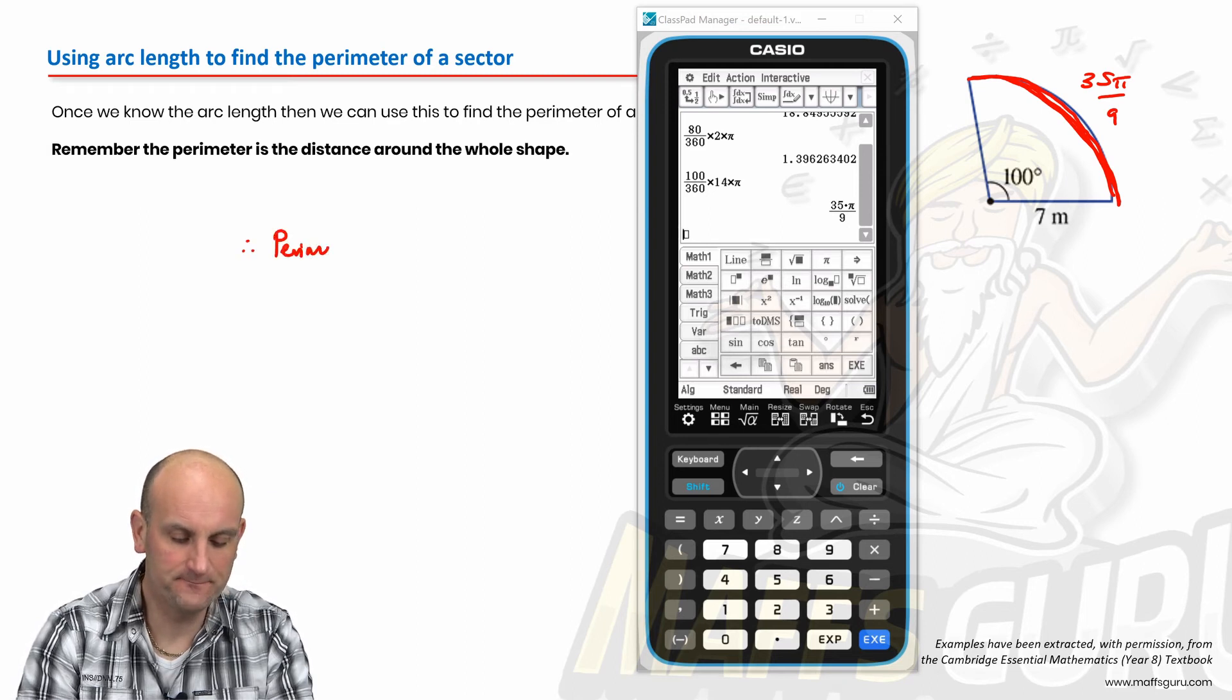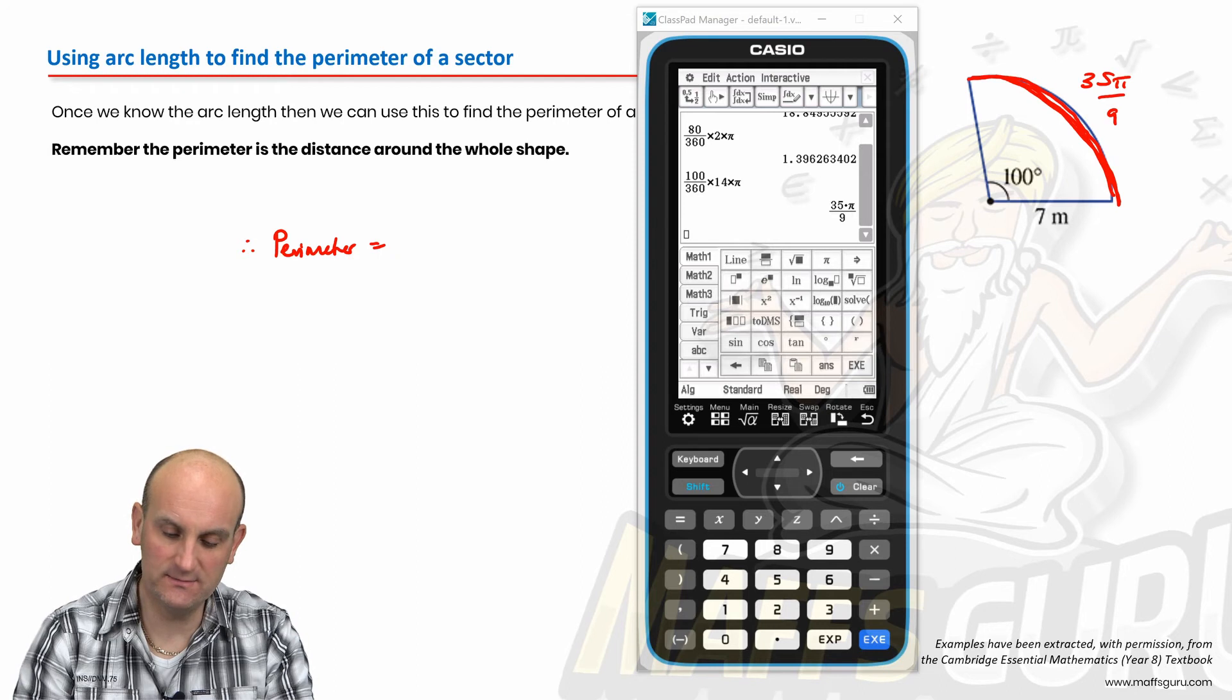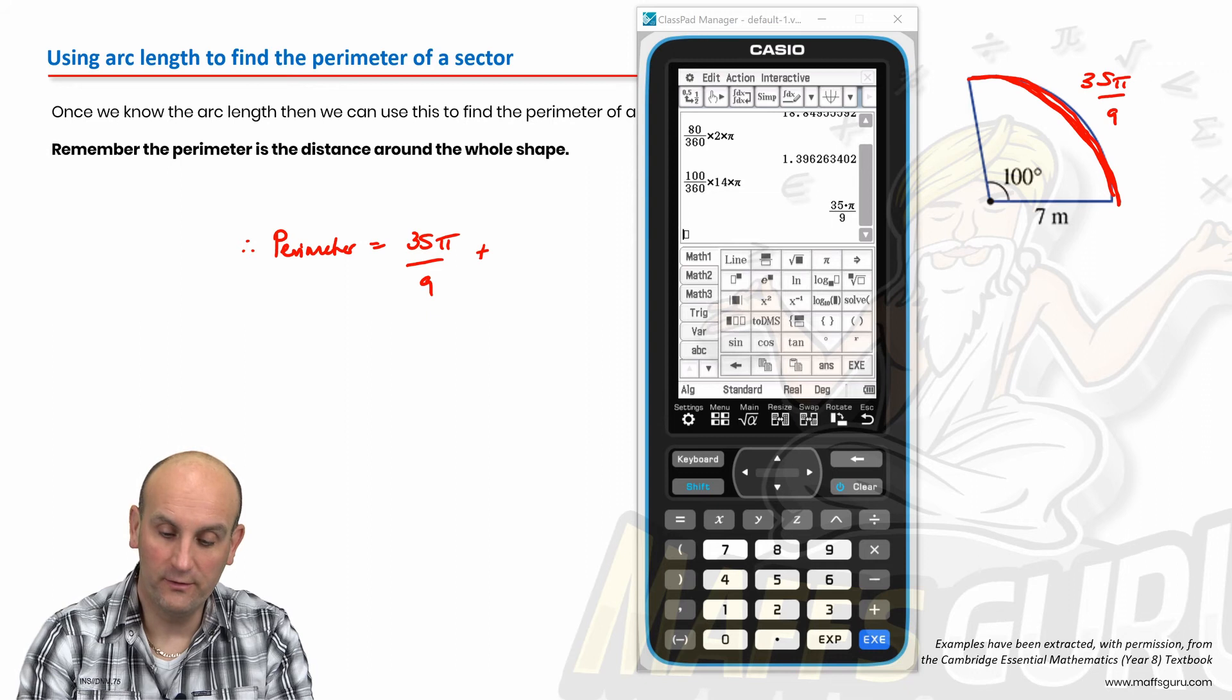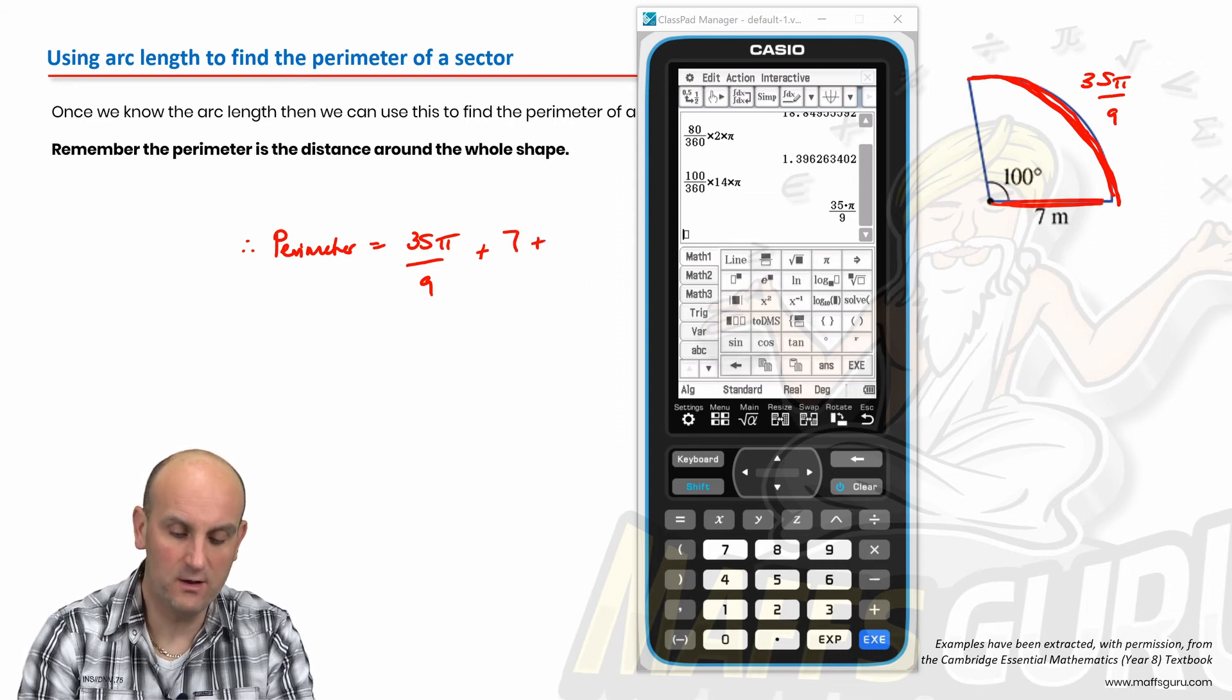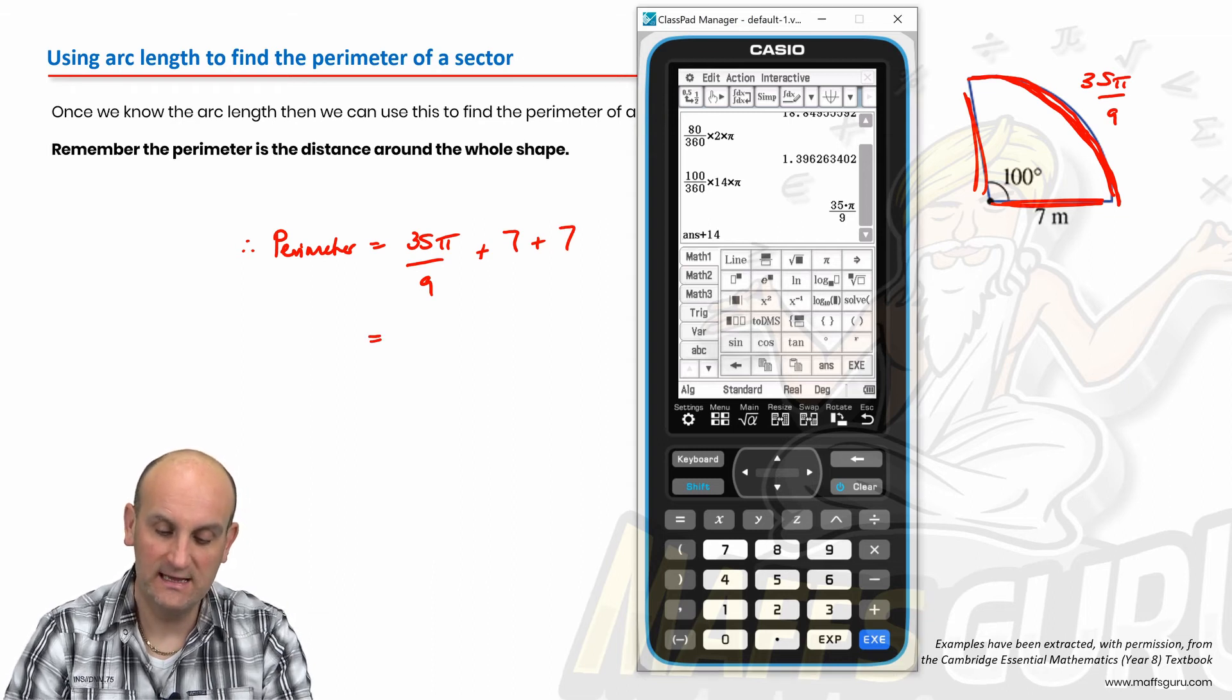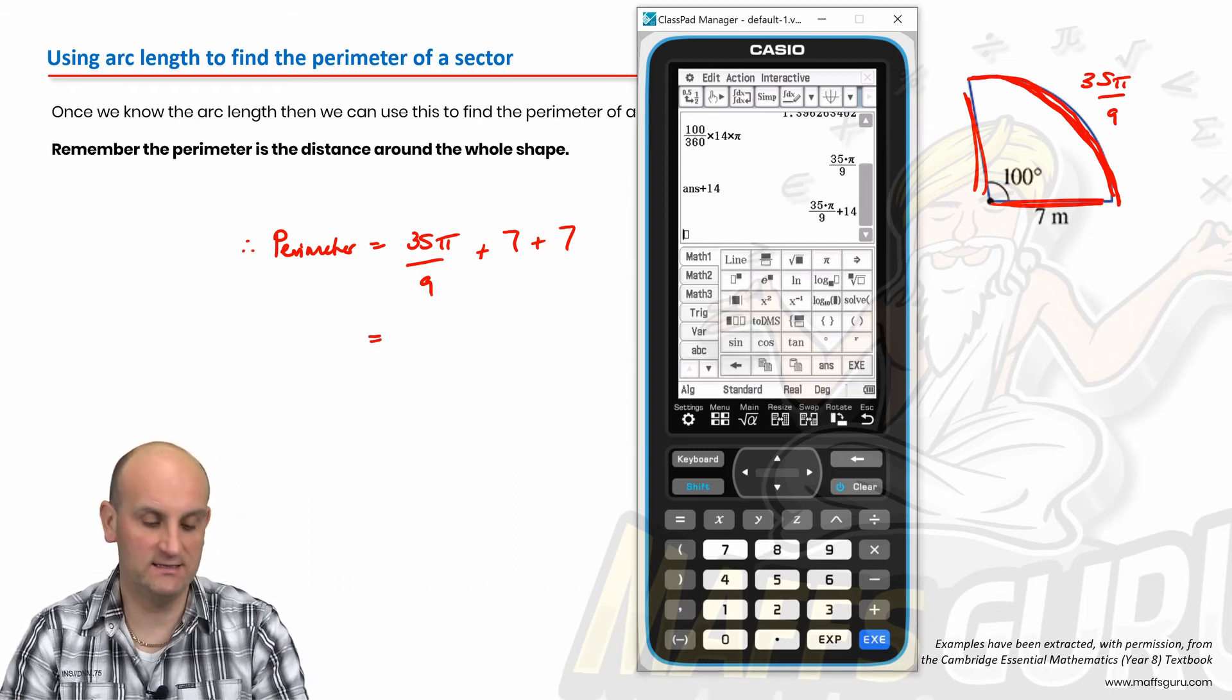So we can say, therefore, the perimeter of that shape is going to be 35 pi on 9 plus what? This length here, 7, plus this length here of 7 as well. So I can now just go plus 14 on my calculator. Hit enter.